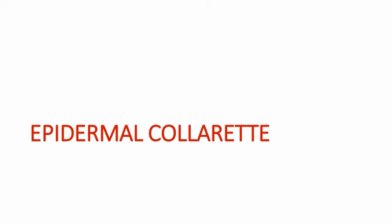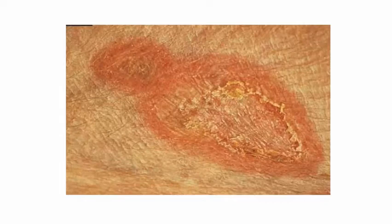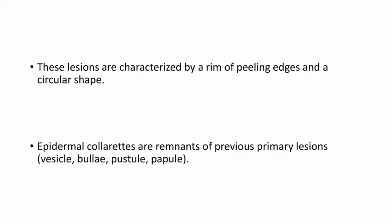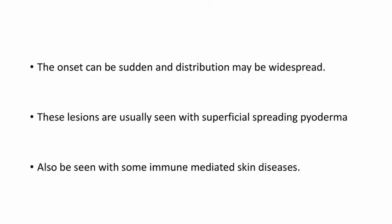First one is epidermal collarette. This is a picture of epidermal collarette — you can see the scaly edges and the color of the skin. Epidermal collarettes are characterized by a rim of peeling edges and a circular shape. Usually they are remnants of previous primary lesions like vesicle, bulla, pustule, or papule. They have a sudden onset and widespread distribution and are usually seen with superficial spreading pyoderma or other immune-mediated skin diseases.